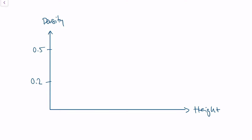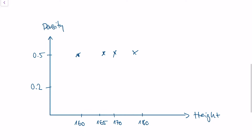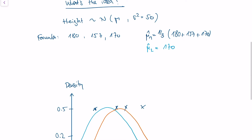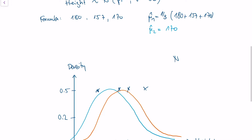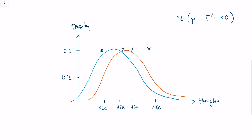Let's get more into the intuition of how we use maximum likelihood to come up with those formulas. We have our height example and we observe some heights: 160 centimeters, 165, 170, and 180. We have one person who is 160 centimeters tall and the tallest person 180 centimeters tall. We know the variance of our distribution — we know the shape — but what we try to estimate is how the distribution is located. We know it's normally distributed with variance 50, but what we don't know is what mu is, and mu shifts the distribution to the right and to the left.